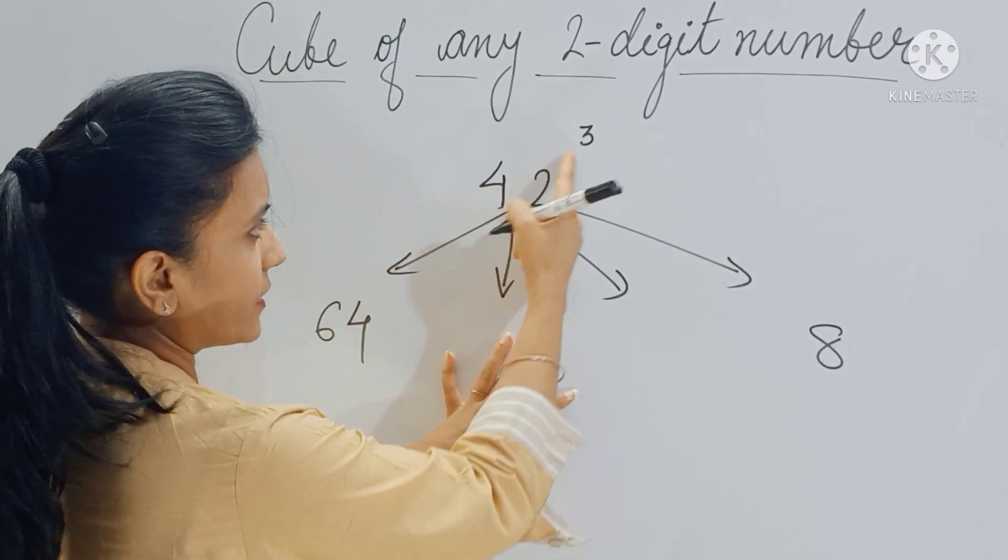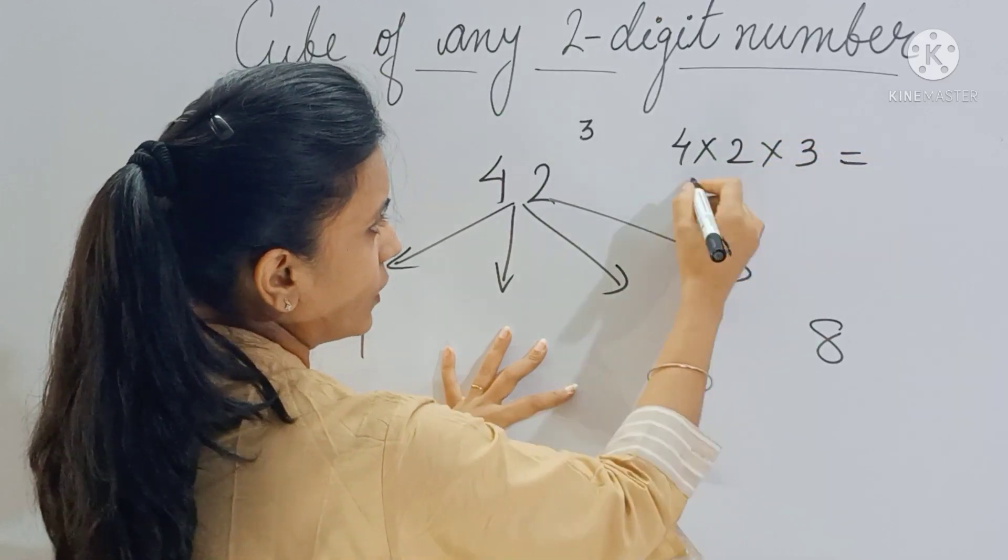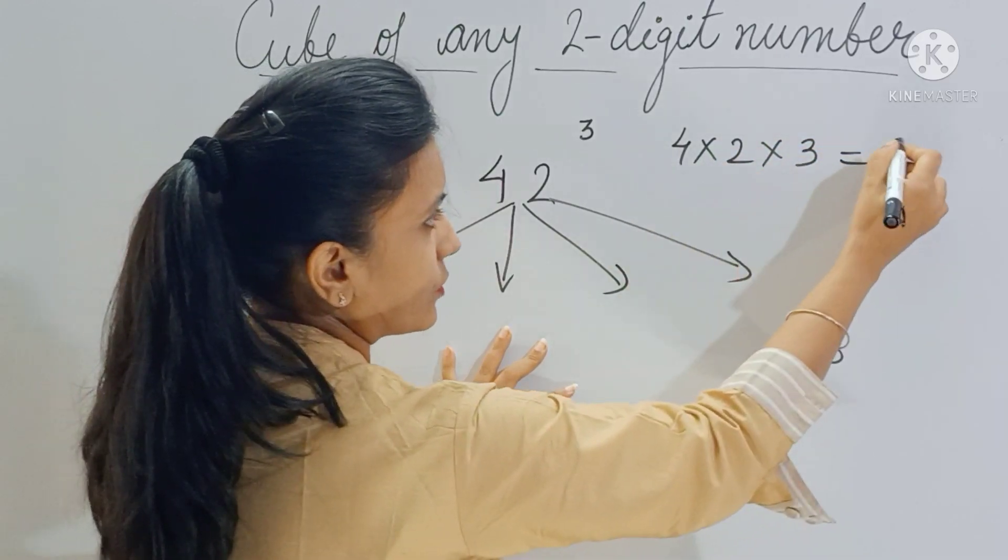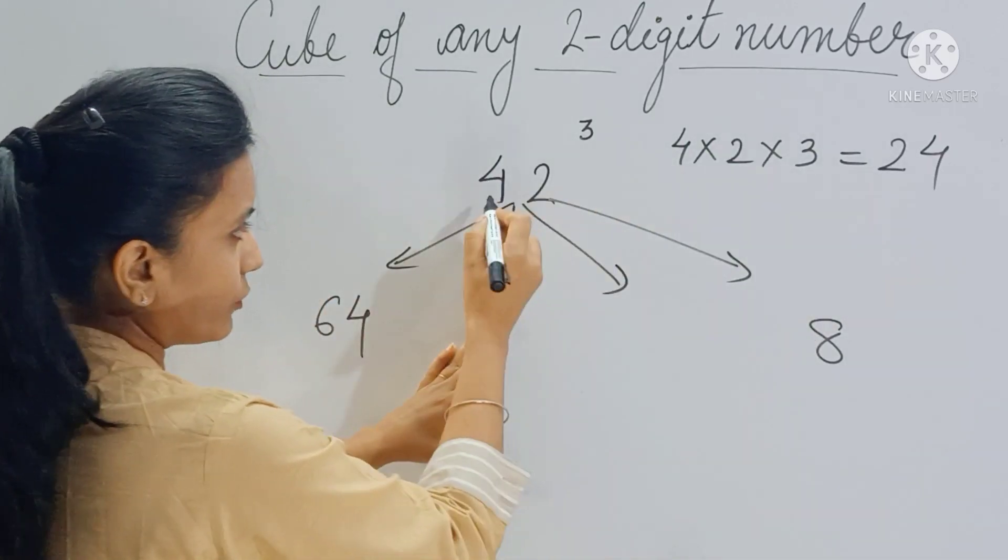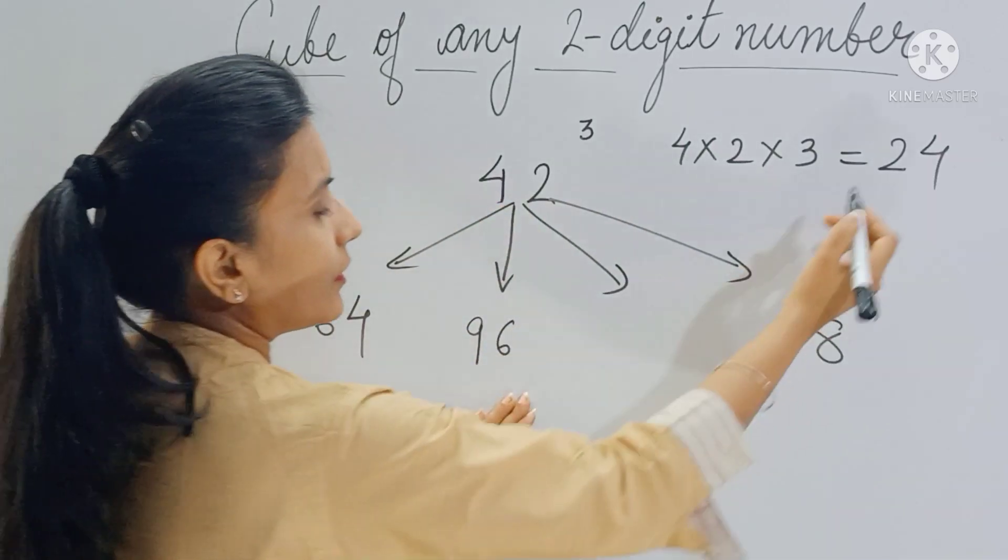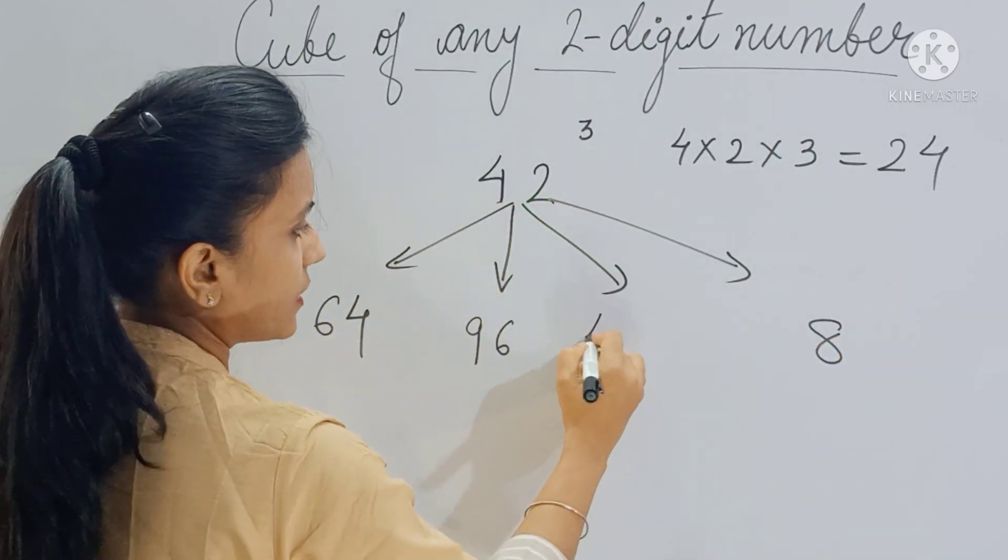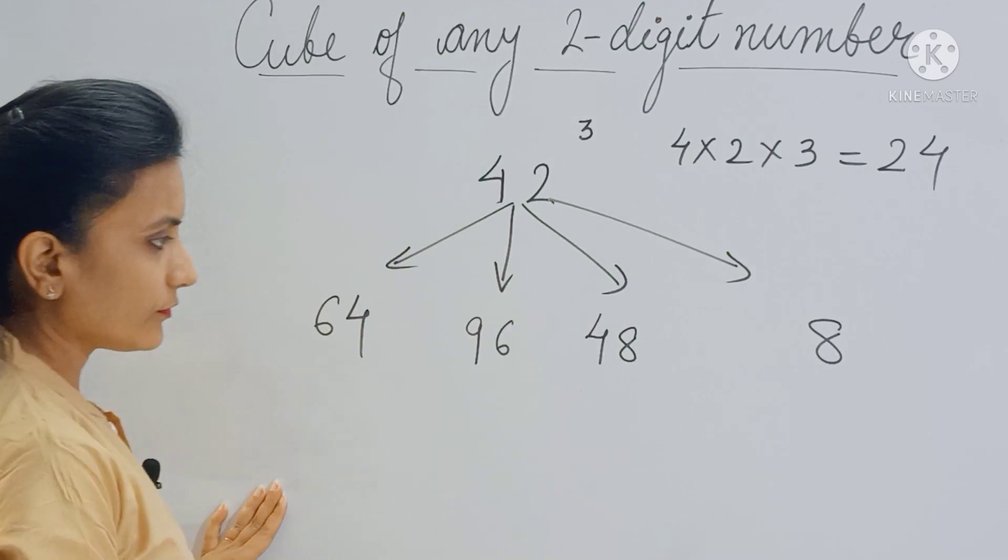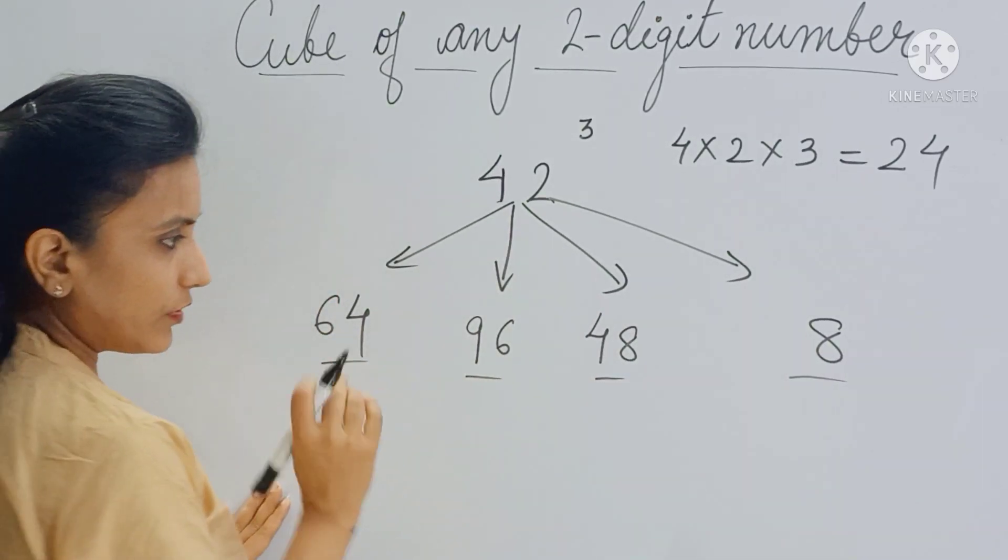So 4 × 2 × 3 will give you - 4 twos are 8, 8 threes are 24. Now to get this part, multiply 24 with 4, so you get 96. To get this part, multiply 24 with 2, so you get 48. So these are four parts of my answer.